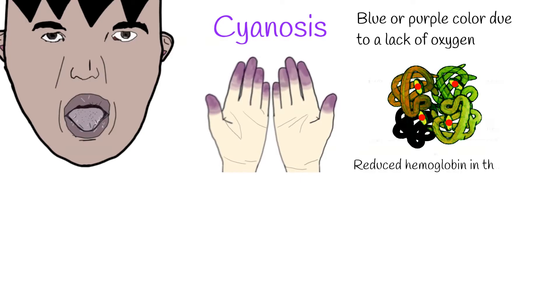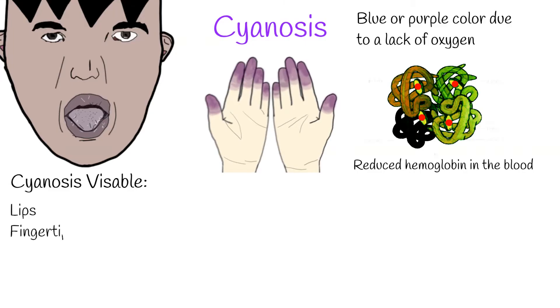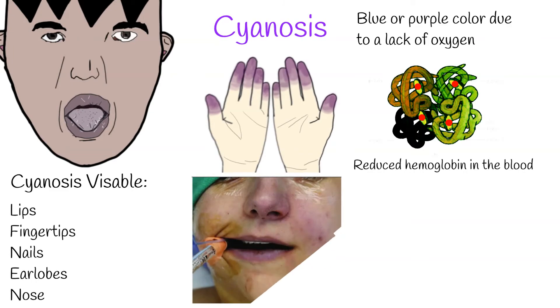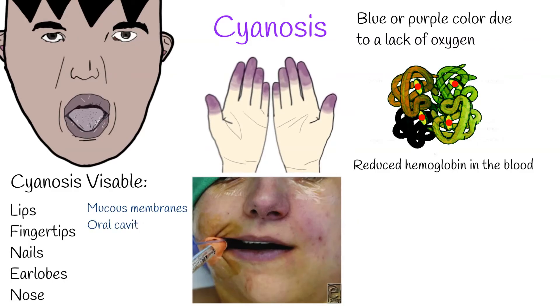The most common places where cyanosis is visible include lips, fingertips, nails, earlobes, and nose. In some cases, mucous membranes in the oral cavity and the conjunctiva are more helpful to detect cyanosis.